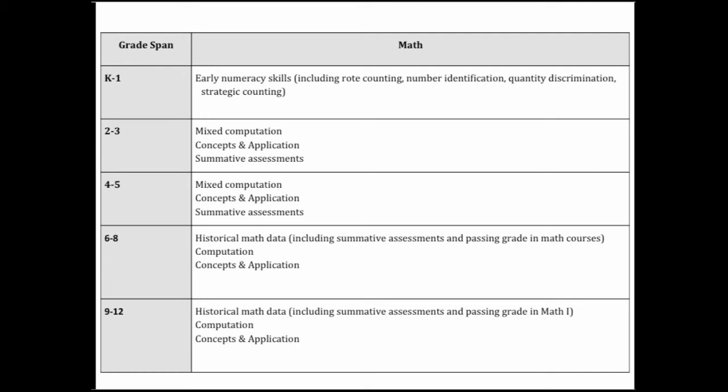In second through fifth grades, teams may wish to examine student performance on summative assessments such as benchmarks and EOGs as one piece of data around math performance. In addition, measures of mixed computation fluency and grade-level math concepts and applications can be examined through standard universal screening measures. These scores should be compared against a research-based criterion or norm group to determine risk. If large percentages of students in these grades demonstrate deficits, school teams will wish to intensify core instruction for all students first, in addition to providing supplemental intervention to those with the largest deficits.